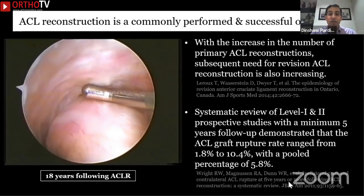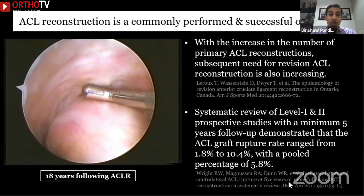But with the increase in number of primary ACL reconstructions, the subsequent need for revision ACL reconstructions is also going to increase. A good systematic review of level one and two prospective studies with a minimum five-year follow-up shows that ACL graft fracture ranges from 1.8% to 10.4%, with a pooled percentage of about 5.8%. In high-risk groups such as athletes, this may go up to 15 or 20%, as has been seen with adolescent females.